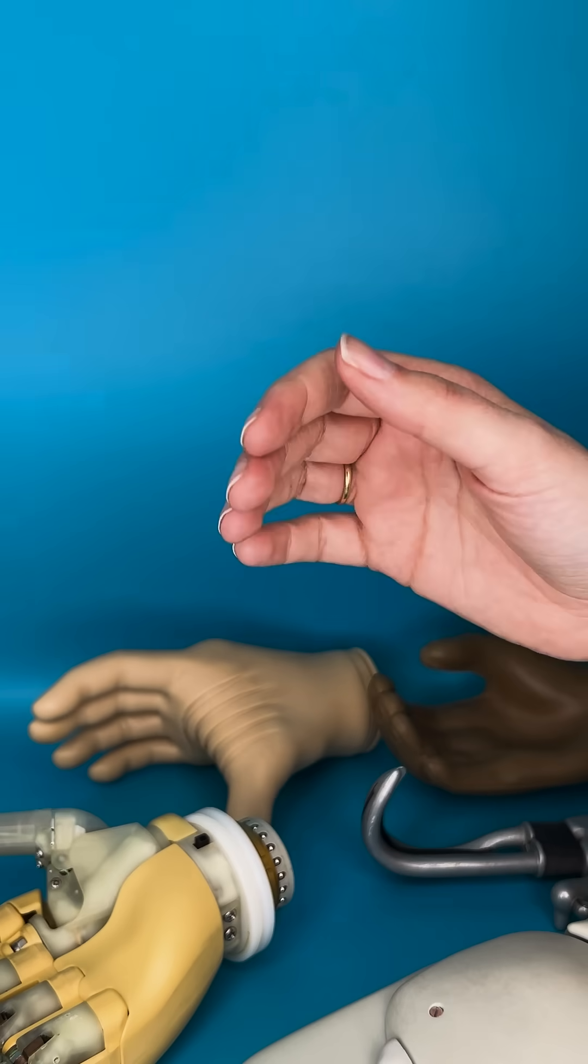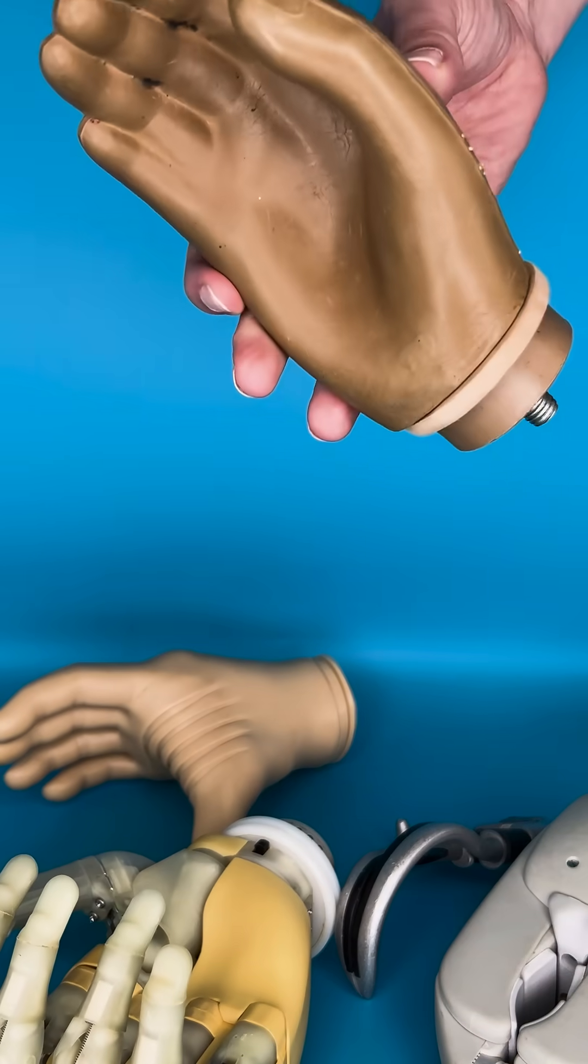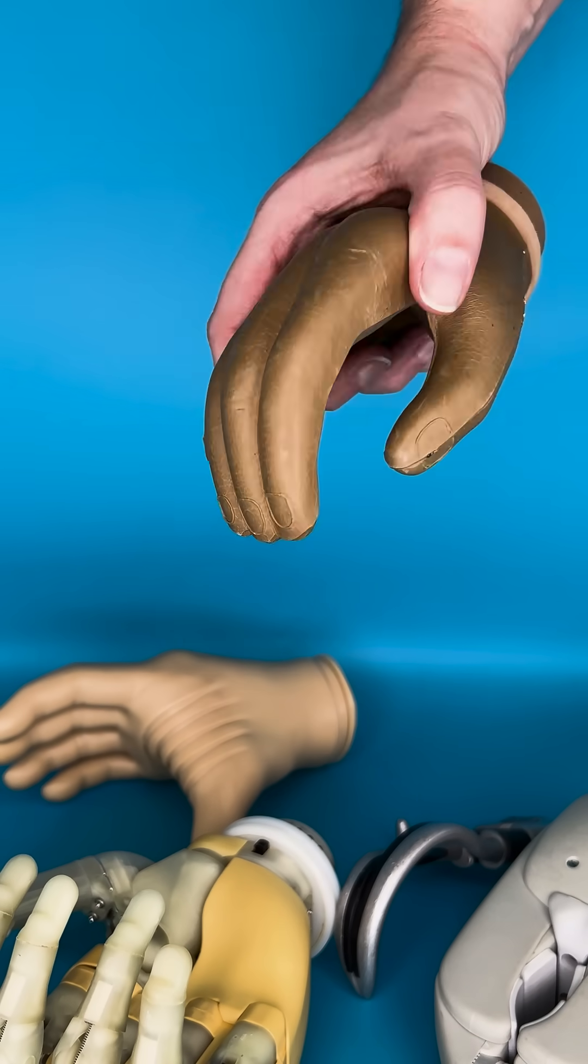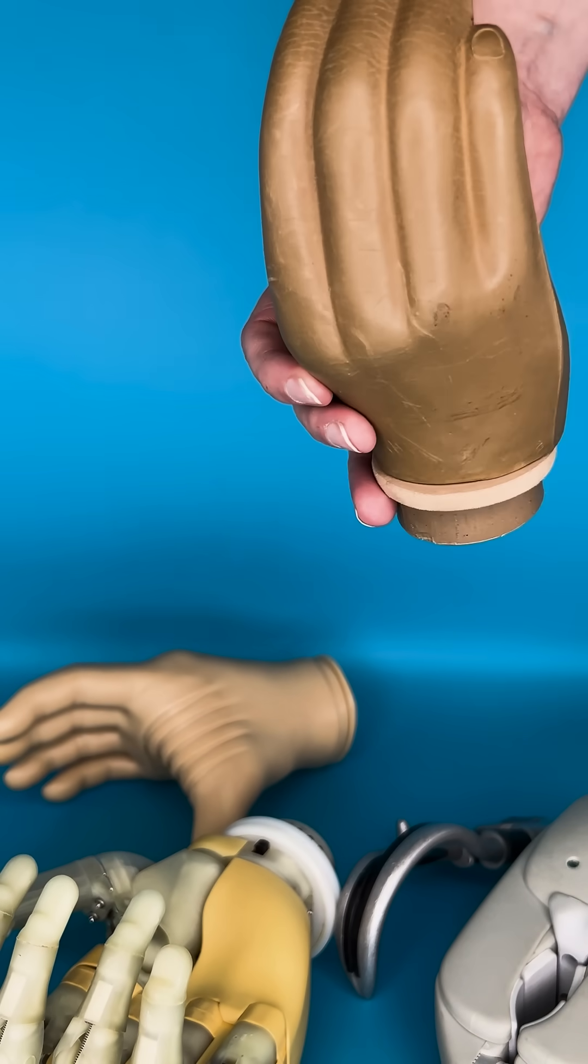There are different options but there's usually a trade-off between function and appearance. This is a passive hand, it doesn't move. You might choose something like this if you wanted a lifelike solution. They can be used to stabilize objects and they're nice and light.